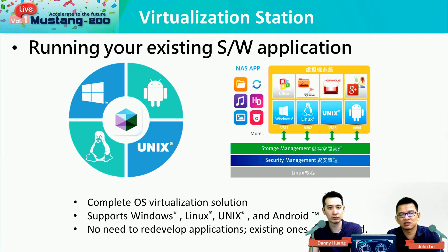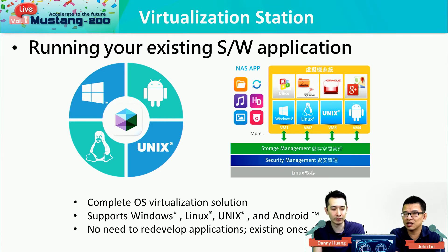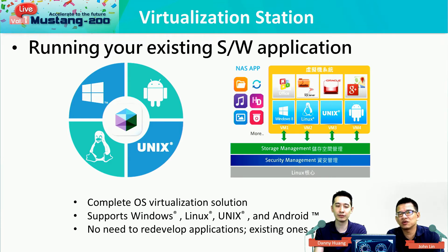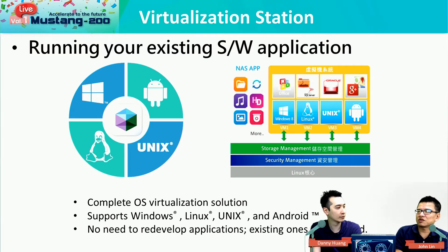The first way is the virtualization station. With this virtualization station, you can create virtual machines in Mustang 200 — for example, one, two, or three virtual machines — to deal with different kinds of applications. The virtualization station supports Unix, Windows, and Android, providing a complete software virtualization solution. You can run your existing software applications, for example, if you have a mail server, you can create a virtual machine in Mustang 200 and run the mail server on it.